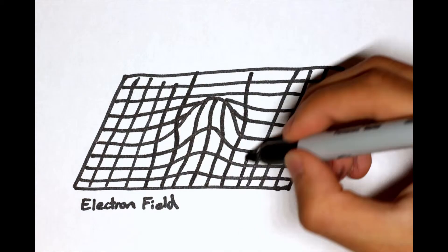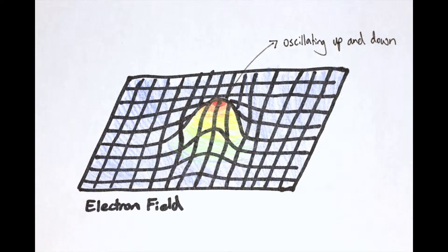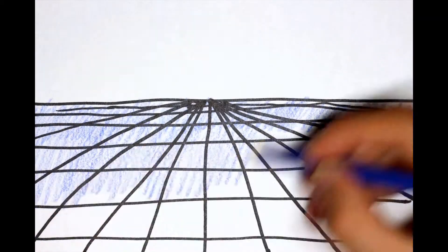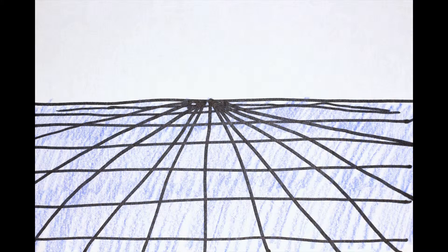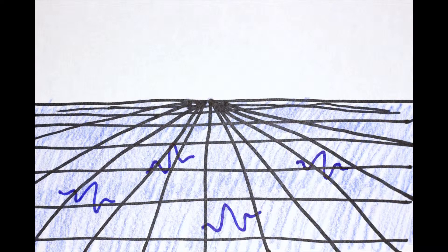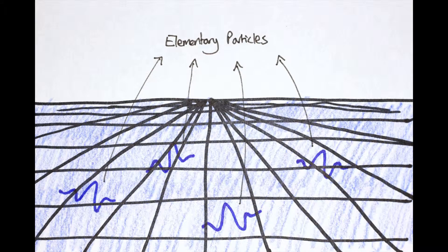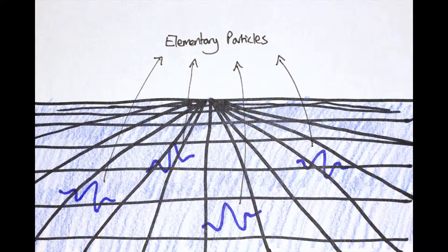For example, the electron particle is actually just a localized vibration in the electron field. You can think of quantum fields as being oceans that fill up the entire universe. When you excite the quantum field, you create ripples, these bundles of energy in the ocean. And these bundles of energy are actually the elementary particles that make up our universe.